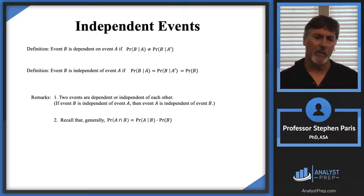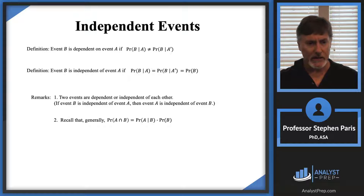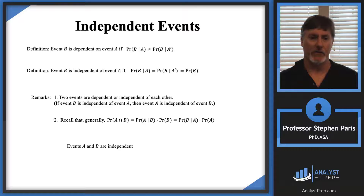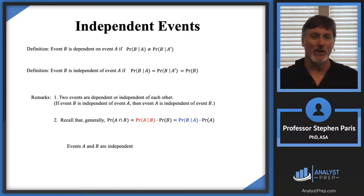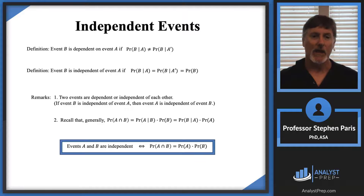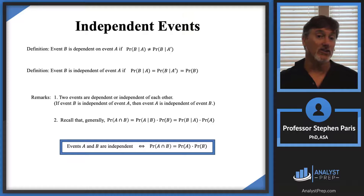A second remark: recall that the probability of A intersect B generally is the probability of A given B times the probability of B, or interchanging the roles of A and B, the probability of B given A times the probability of A. But now if events A and B are independent of each other, the probability of A given B is just the probability of A, and the probability of B given A is just the probability of B. So if A and B are independent, then the probability of A intersect B equals the probability of A times the probability of B. That's the key fact we're going to use to determine whether events are independent of each other.